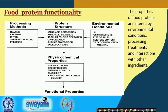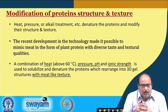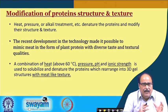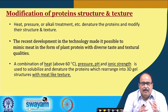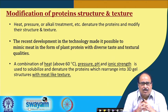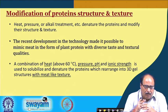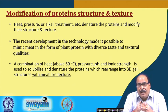With varying conditions of processing methods and environmental conditions, protein structures get changed. This change in protein structure influences its physical properties, its functional properties, and many other factors. In most of these processes, heat, pressure, and alkali treatments are involved, and these factors result in the denaturation of proteins. This denaturation process modifies the structure and texture of the protein. Recent developments in technology have made it possible to mimic meat in the form of plant proteins with diverse taste and textural qualities.